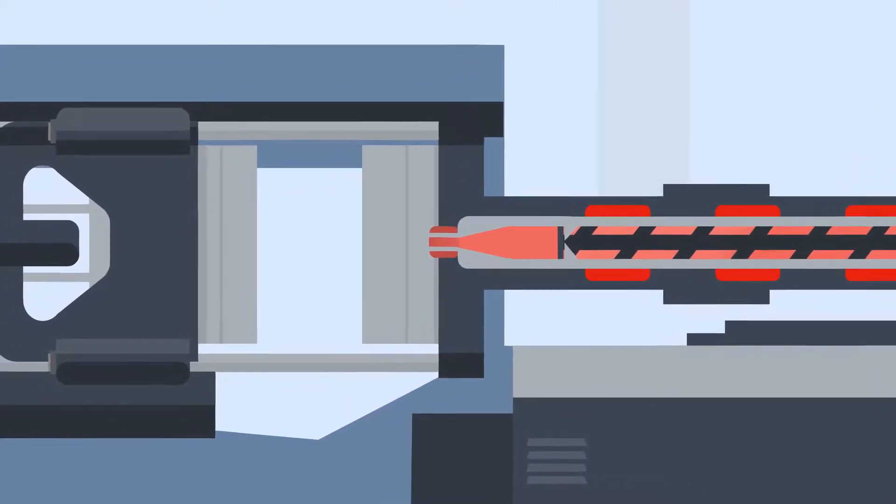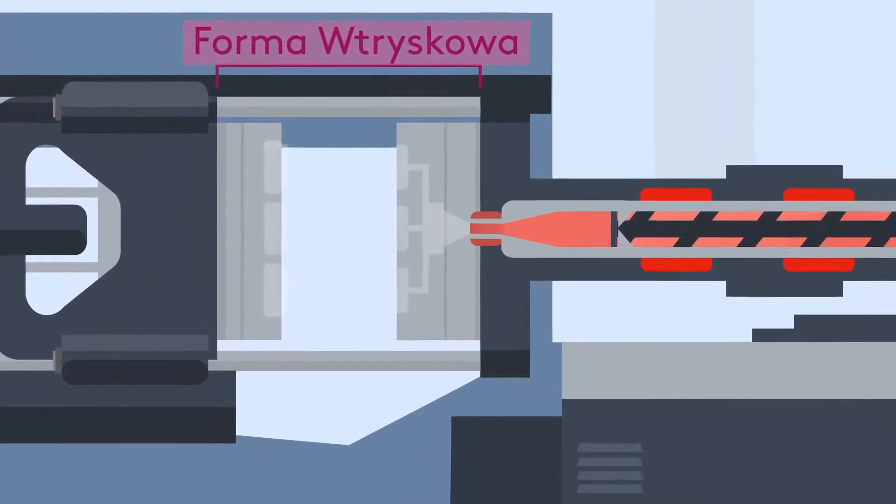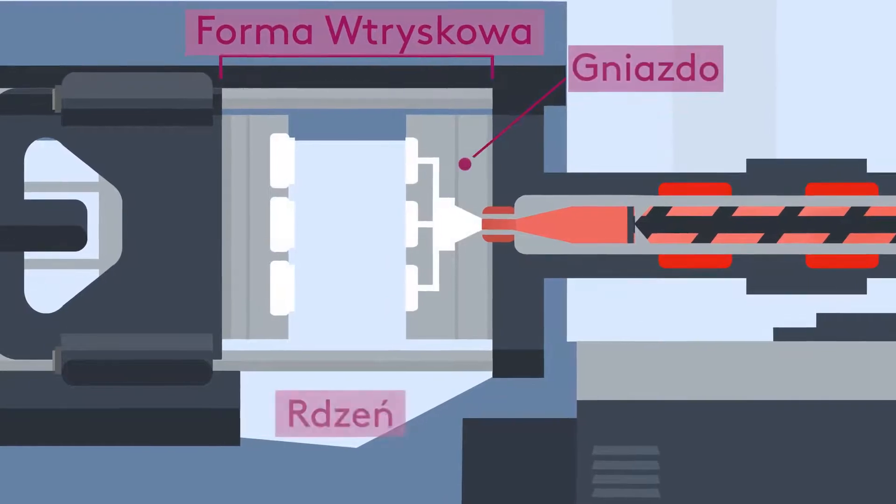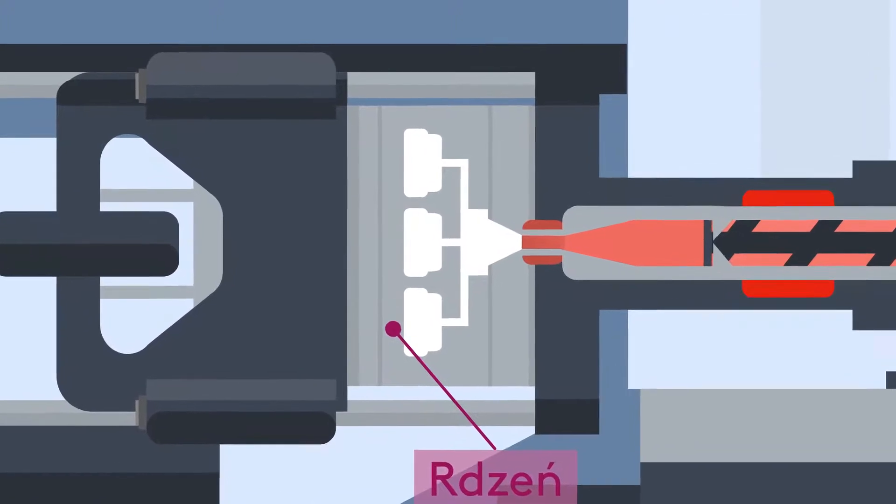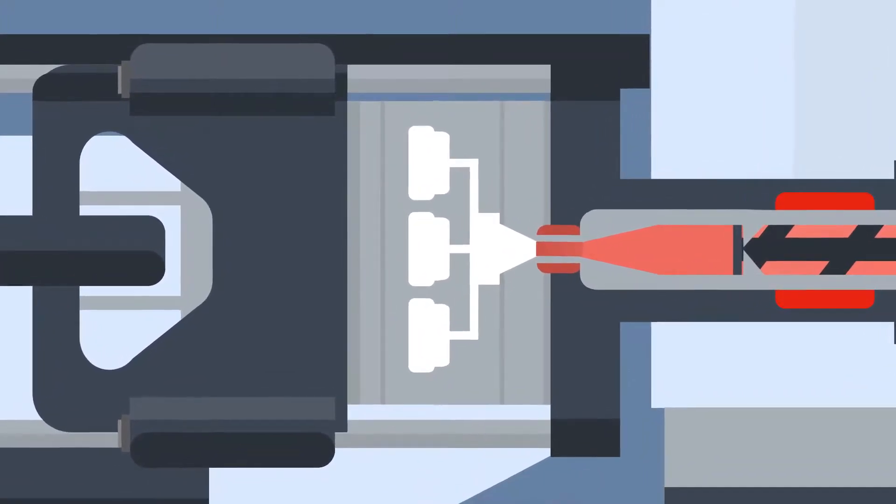Before the molten plastic is injected, the tool, which is usually made up of a fixed half called the cavity and a moving half called the core, closes. When closed, the clamp will apply pressure to the tool, ready for the injection of the plastic.